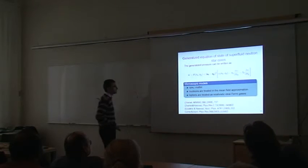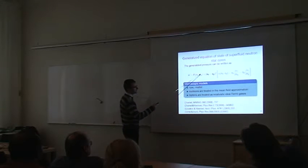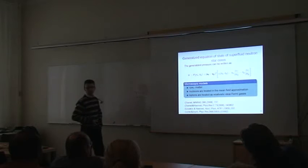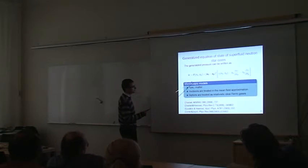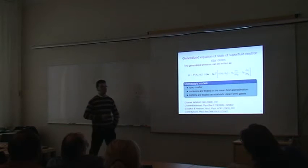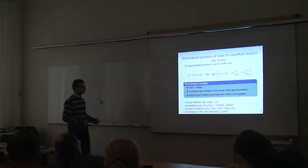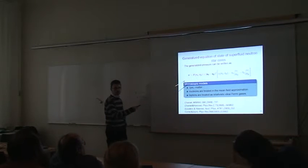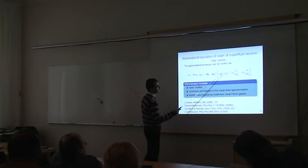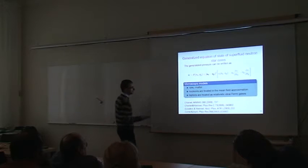In my title there was a generalized equation of state. Usually for single fluid models, one just needs to know the pressure as a function of density. In the case of multi-fluid systems, the pressure itself can also depend on the velocities. In the simplest case of only two fluids, the pressure is given by the usual pressure plus some extra piece which depends on this function alpha.